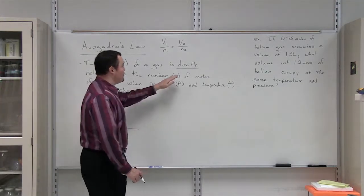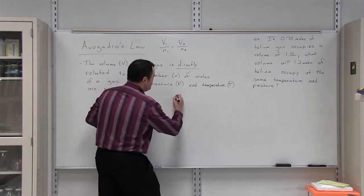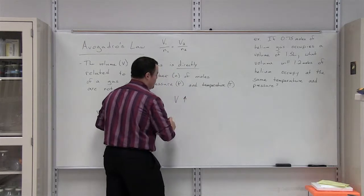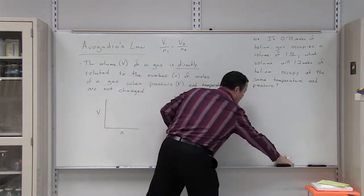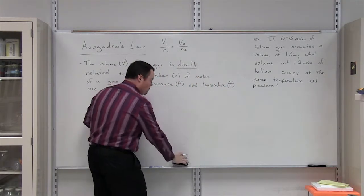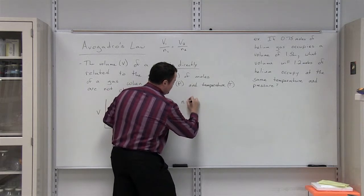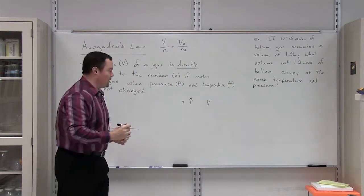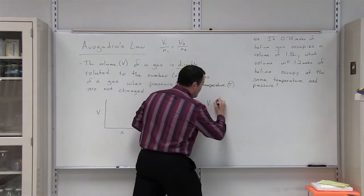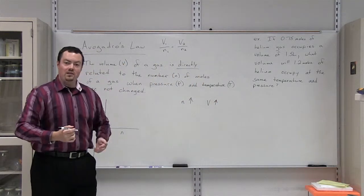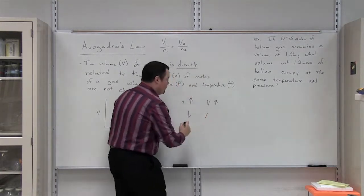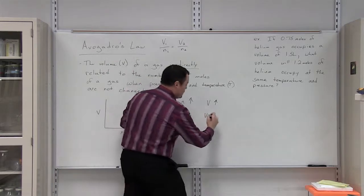What does it mean to have a direct relationship? If we increase the number of moles of a gas, then we would expect the volume that gas occupies to also increase. If we decrease the number of moles, then we would expect the volume of that gas to decrease.